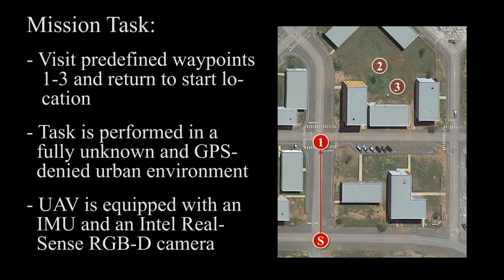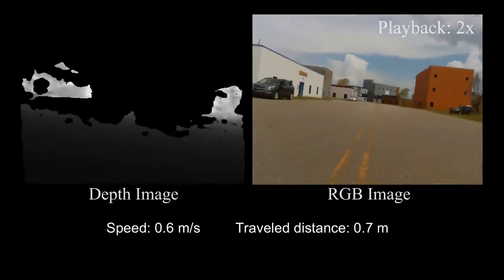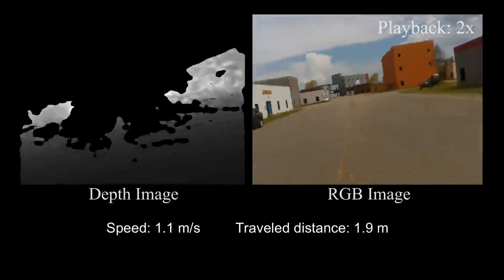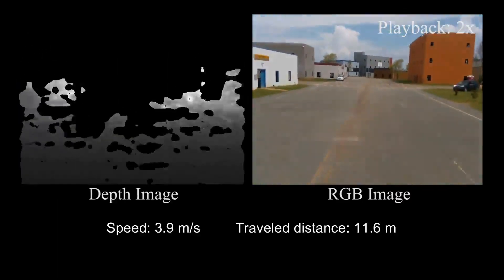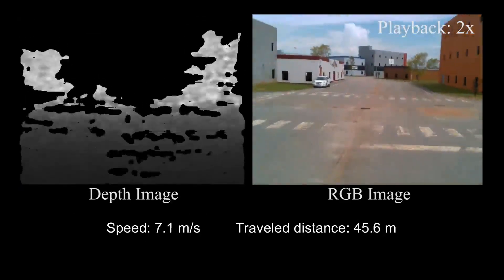The mission task is to visit predefined waypoints 1, 2, and 3 and return to the start location. The task is performed in a fully unknown and GPS-denied urban environment. The UAV is equipped with an IMU and an Intel RealSense RGBD camera. After takeoff, the quadrotor flies with a top speed of 7 meters per second to waypoint 1.